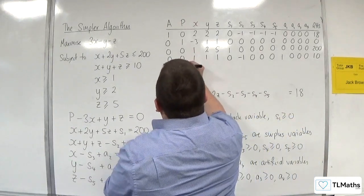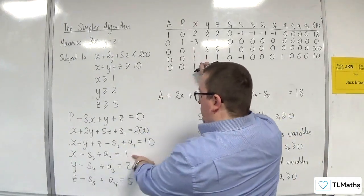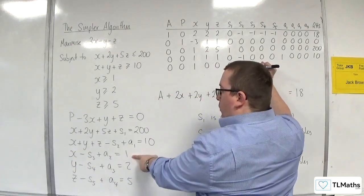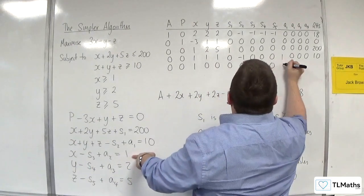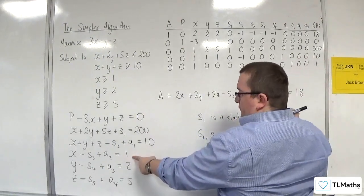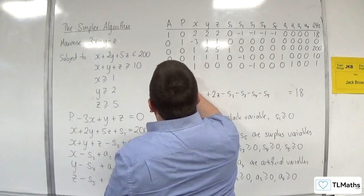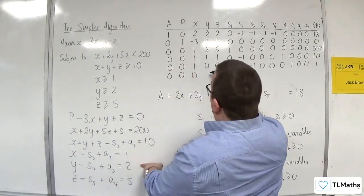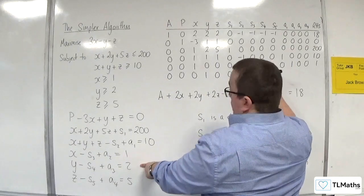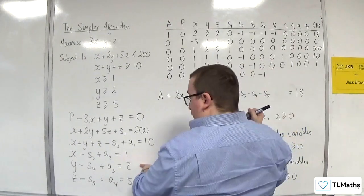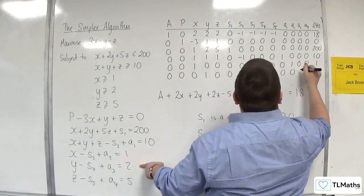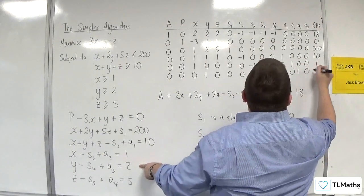Then for x greater than or equal to 1: 0, 0, 1, then minus 1 for s3, and a2 is 1, right-hand side 1. Then for y greater than or equal to 2: 0, 0, 0, 1, then 0, 0, 0, 0, minus 1 for s4, then 0, 0, 1 for a3, 0, right-hand side 2.